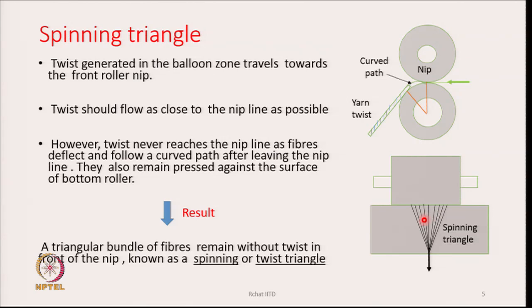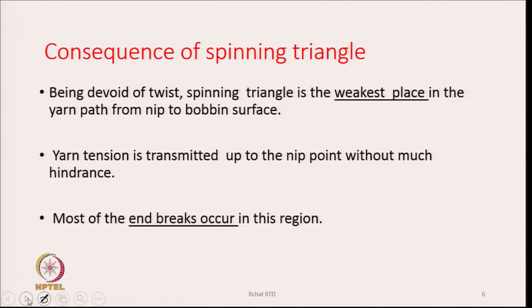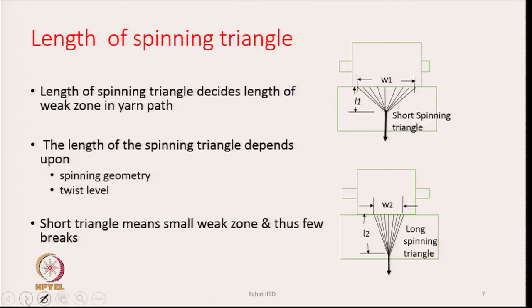Being devoid of twist, the spinning triangle is the weakest place in the yarn path. The yarn is also under tension while being spun, and that tension is transmitted up to the nip point without much hindrance. Therefore most of the breakage possibility is in the spinning triangle zone, where fibres are under tension but untwisted. Spinning may become impossible if we do not take care of the size of the spinning triangle, and we will see how its size can be manipulated with the geometry of the spinning zone.